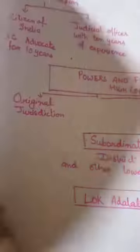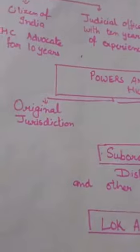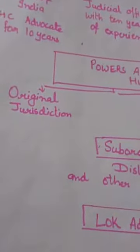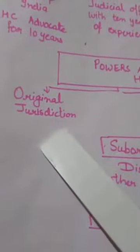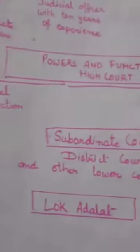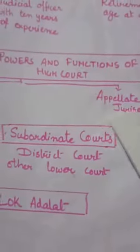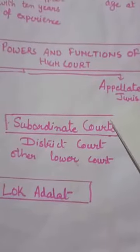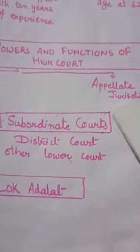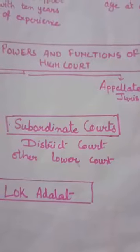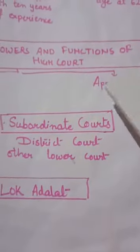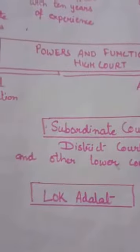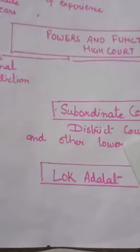Under appellate jurisdiction, both civil and criminal cases can be heard on appeal against decisions taken by the lower court. So any original jurisdiction violation of law comes directly to the High Court, and any criminal or civil case decided in the lower court can be appealed in the High Court.